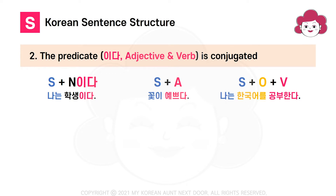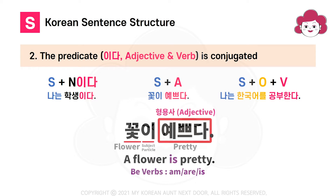Number 2: Predicate is conjugated — such as 이다, adjective, and verb. English speakers are often confused on the predicate adjective. In Korean, adjectives act like verbs and are conjugated. They don't require a separate verb like in English.